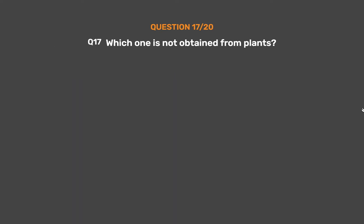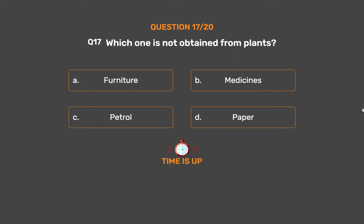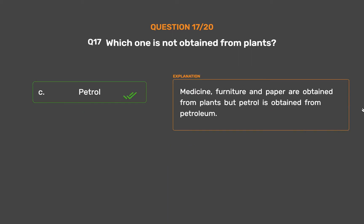Question number 17. Which one is not obtained from plants? Option A: Furniture. Option B: Medicines. Option C: Petrol. Option D: Paper. The correct answer is Option C: Petrol. Medicine, furniture and paper are obtained from plants, but petrol is obtained from petroleum.